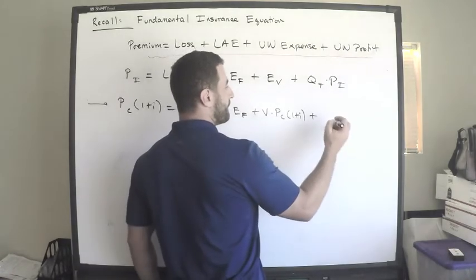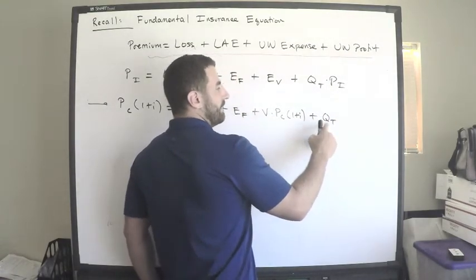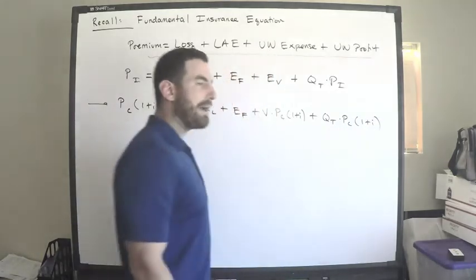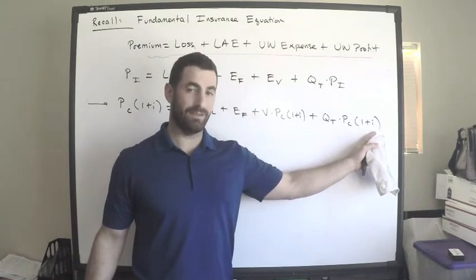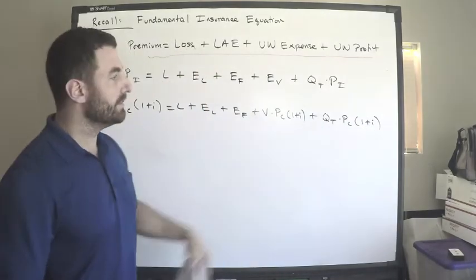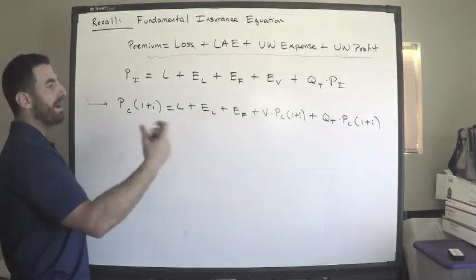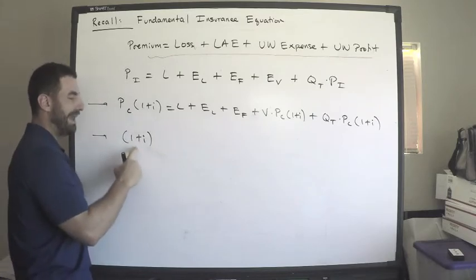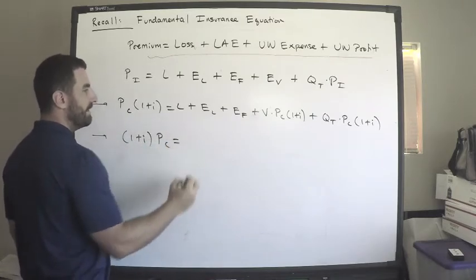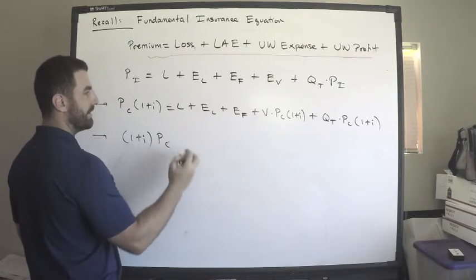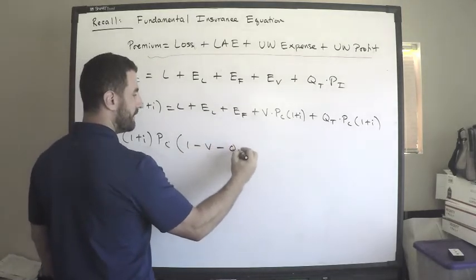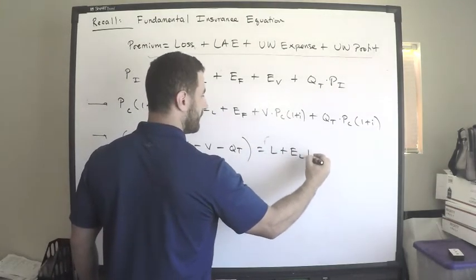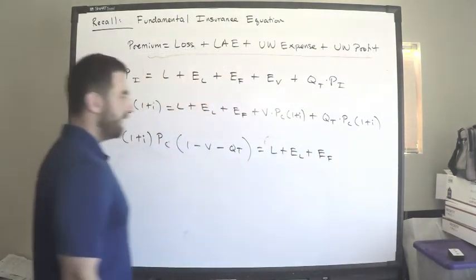So plus, this is going to be Qt, the target profit, times the premium at current times the average indicated rate level factor. i is the average indicated rate level change. When I add one to it, it's a factor, it becomes multiplicative. Now, do the same thing as before. I'm going to combine everything. I'm going to get one plus i on the left hand side. This tells me that one plus i, the indicated rate level, the average indicated rate level factor, times the current premium times one minus v minus the target profit is equal to the loss, the loss plus the loss adjustment expense plus the fixed expense. And that's it.